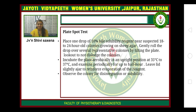Plate spot test procedure: Place one drop of 10% bile solubility reagent near suspected 18 to 24-hour-old colonies growing on sheep blood agar. Gently roll the drop over several representative colonies by tilting the plate. Incubate the plate aerobically in an upright position at 35°C to 37°C, and examine periodically for up to 30 minutes. Tilt the plate slightly to reduce evaporation of the reagent. Observe the colonies for disaggregation or solubility.